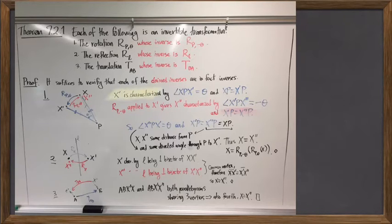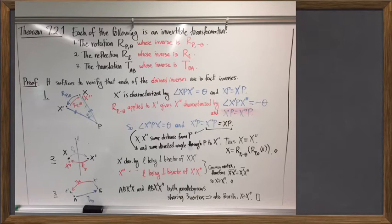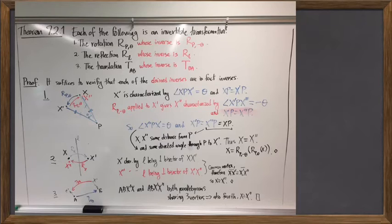To prove that, we had to use the definition of a rotation. The definition of a rotation, in a coordinate-free way, to rotate a point X about the center P by an angle of theta means: first, the angle XPX′, where X′ is the image of that rotation, equals theta; and also X is the same distance away from the rotational center as its image is. So we also have a congruency of these two segments.